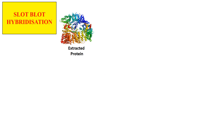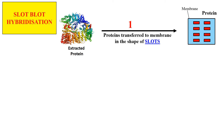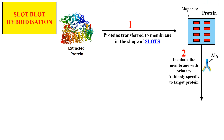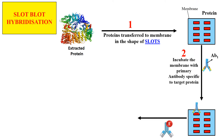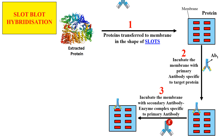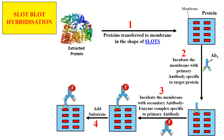Now, slot blot hybridization. This technique is very much similar to dot blot hybridization. We again take the extracted protein sample and in the first step, this protein sample is transferred to the membrane. The difference is that here the sample is loaded in the form of a slot — not in the form of dots but in the form of a rectangular slot, which is why it is known as slot blot hybridization. The rest of the procedure is the same: first we add the primary antibody specific to the target protein, then we add the secondary antibody conjugated to the enzyme, and the secondary antibody will bind only if the primary antibody is there.